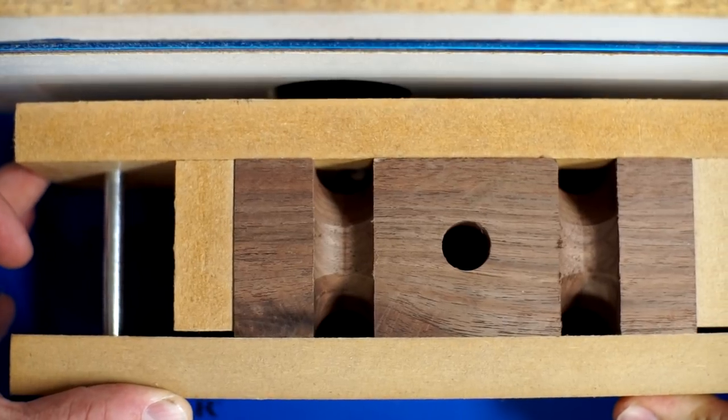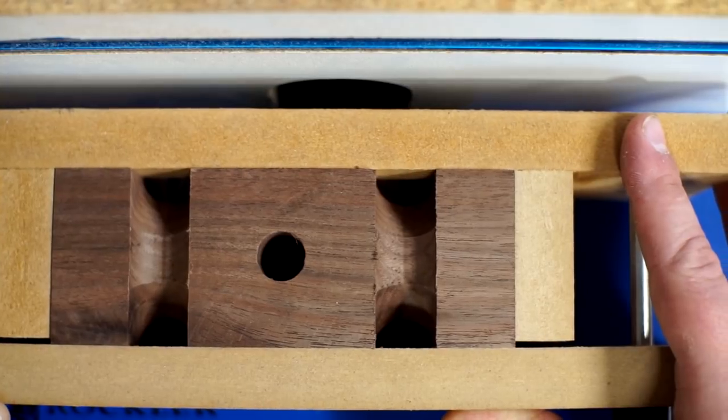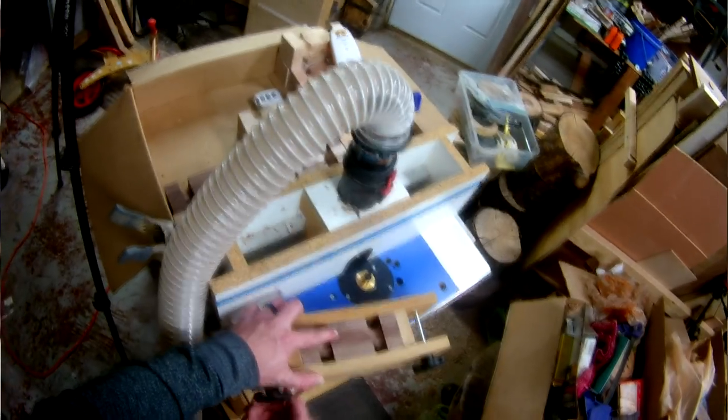The second jig allowed me to put the side profile on as well as the hole in the middle for the handle. This was my first time using router bushings and I was a little apprehensive about it, but in the end it worked out great and I got the exact profile I was looking for.